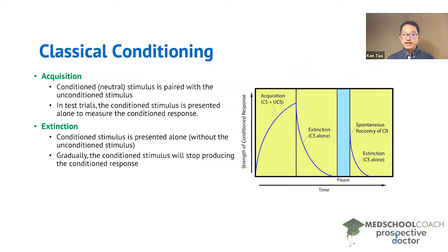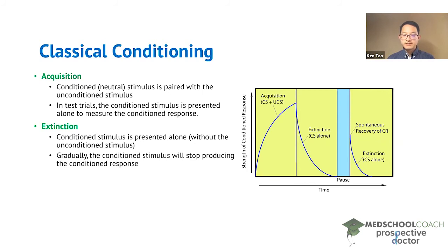Extinction occurs when you present the conditioned stimulus alone without the unconditioned stimulus. Without the unconditioned stimulus, the animal will have the conditioned response at first. But over time, as it learns that the unconditioned stimulus is not going to come with the conditioned stimulus, the response is going to become weaker and weaker until the conditioned stimulus can no longer produce the conditioned response.